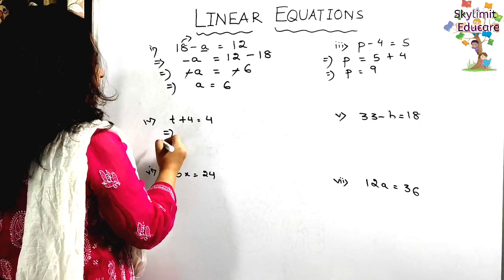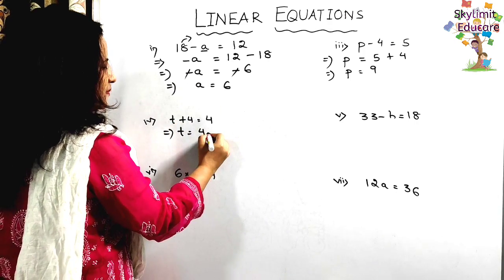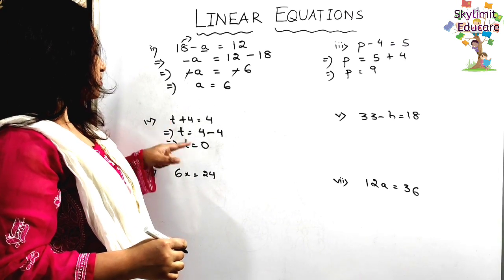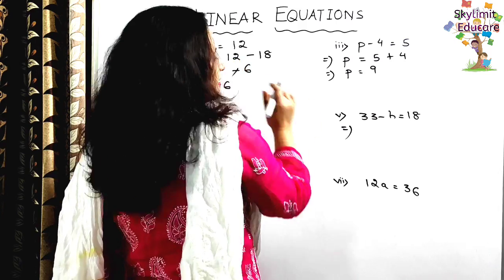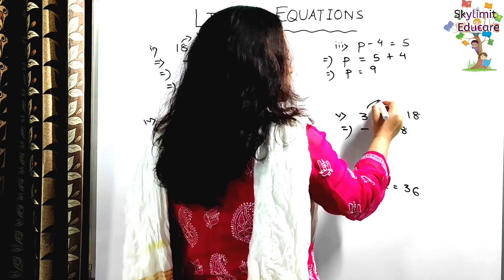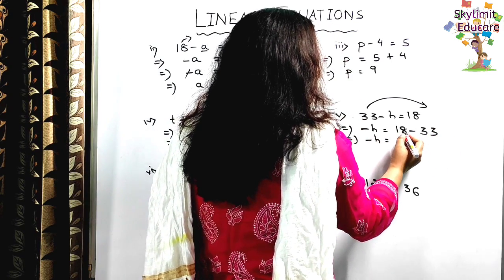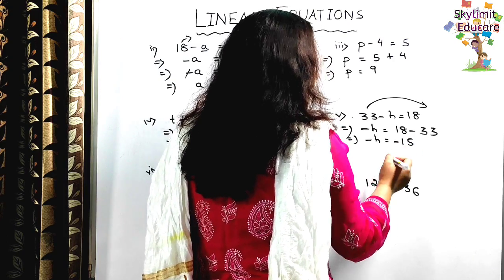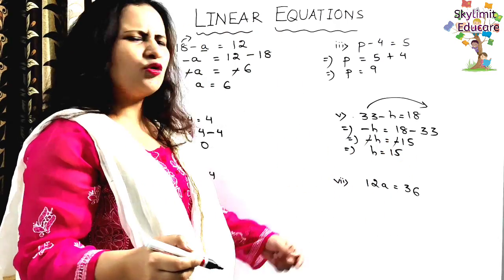Next question: t plus 4 equals 4. Shift plus 4 to the right-hand side — it becomes minus 4. So t equals 4 minus 4 equals 0. Verify: 0 plus 4 equals 4. Correct. Then: h plus 33 equals 18. Keeping minus h, shift 33 to the right — it becomes minus 33. So minus h equals 18 minus 33 equals minus 15. Both minuses cancel: h equals 15.